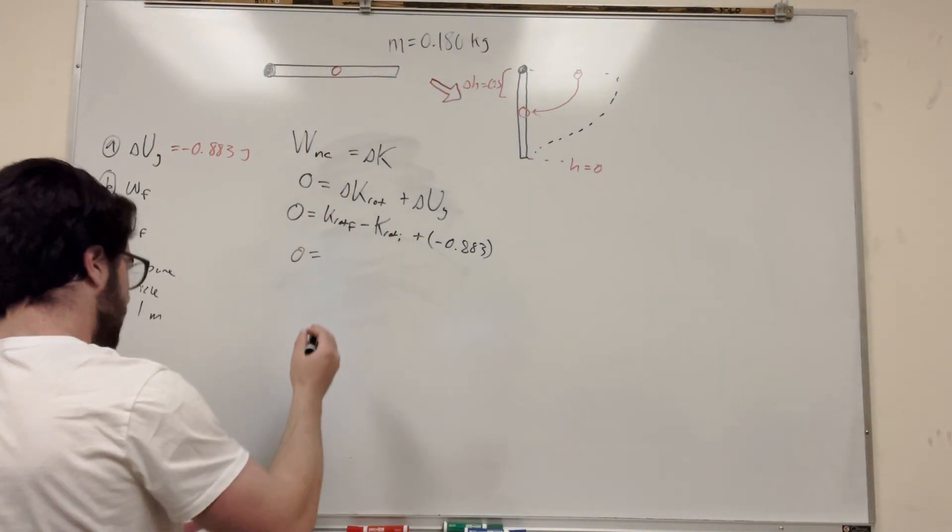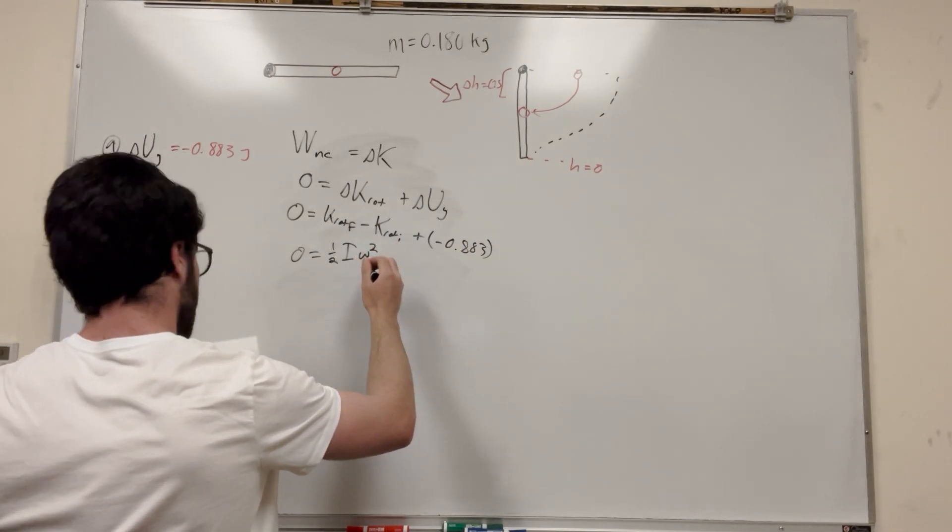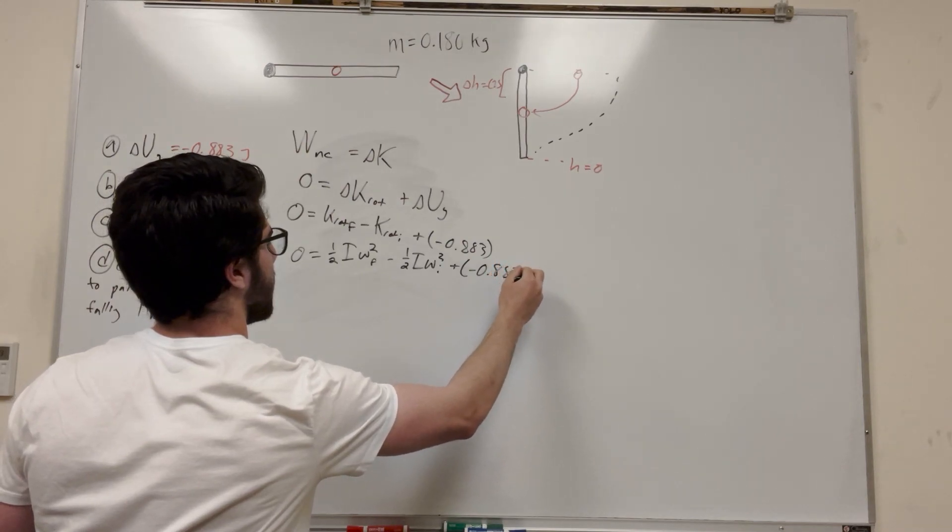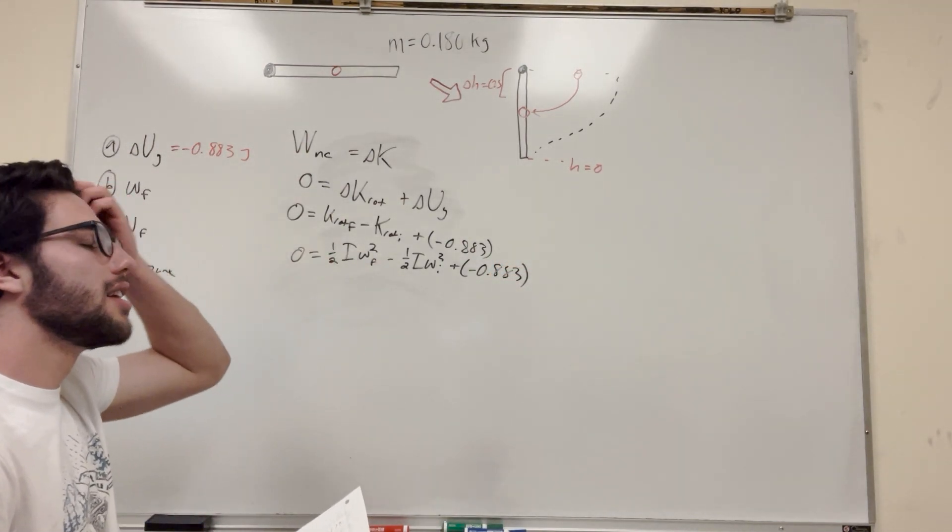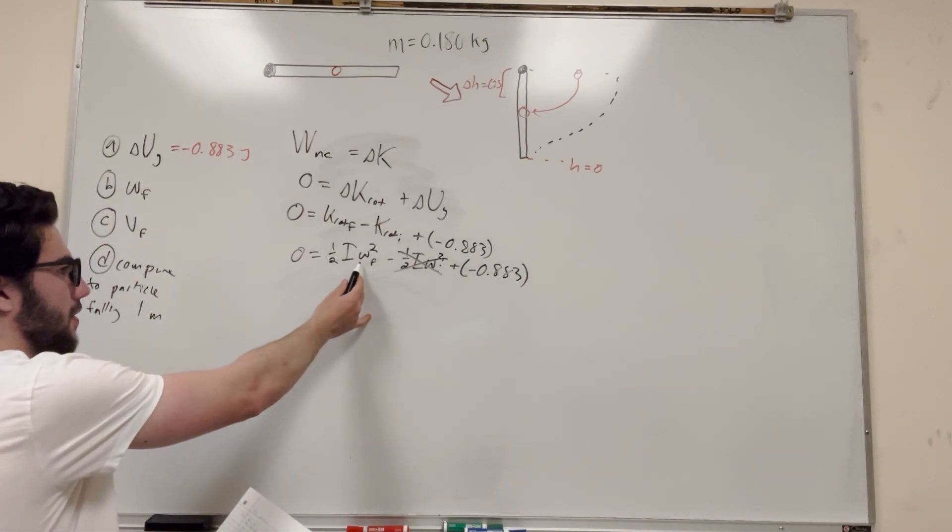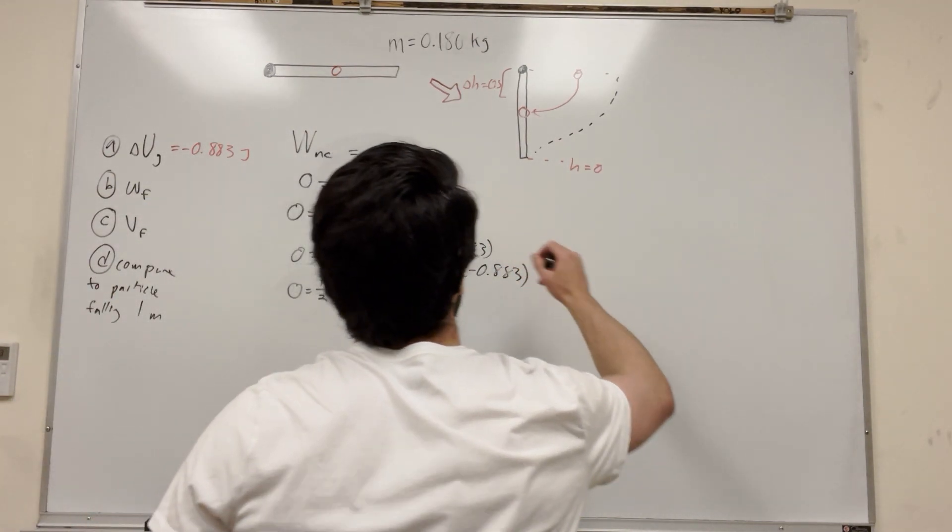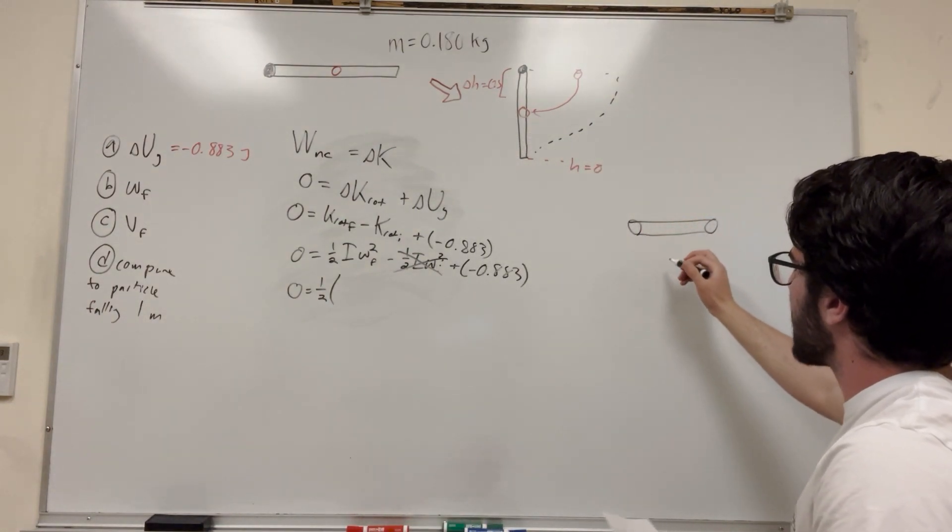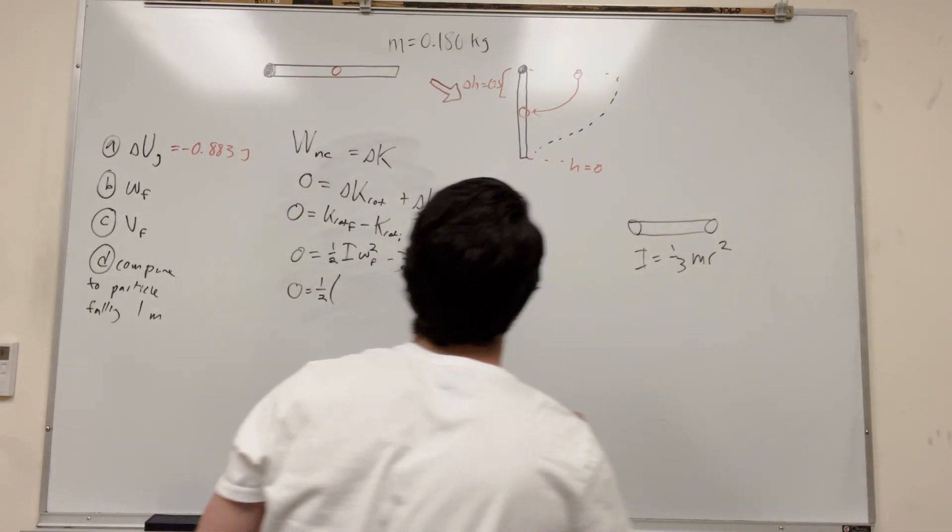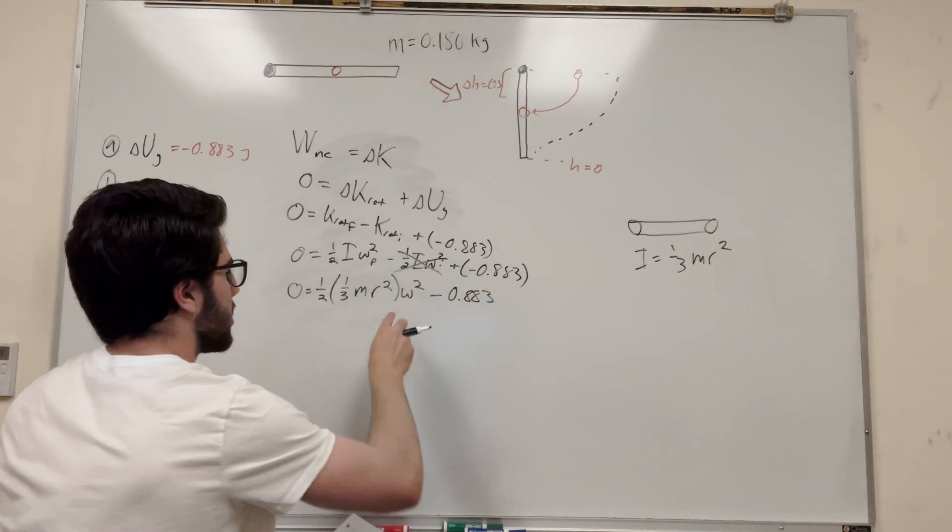So let's expand it out some more. Zero is equal to, so K rotational is one half I omega squared. So this is final. And this is minus one half I omega initial squared plus negative 0.883. So at the beginning, it's starting at rest. So there's not going to be any initial rotational energy. So we need to expand out I. We're looking for omega. So I is the moment of inertia. Now for a rod like this, inertia for a rod, if you have any basically long system like this, this is I is equal to one third mass radius squared. So we're going to plug that right in. One third mass radius squared omega squared minus 0.883.